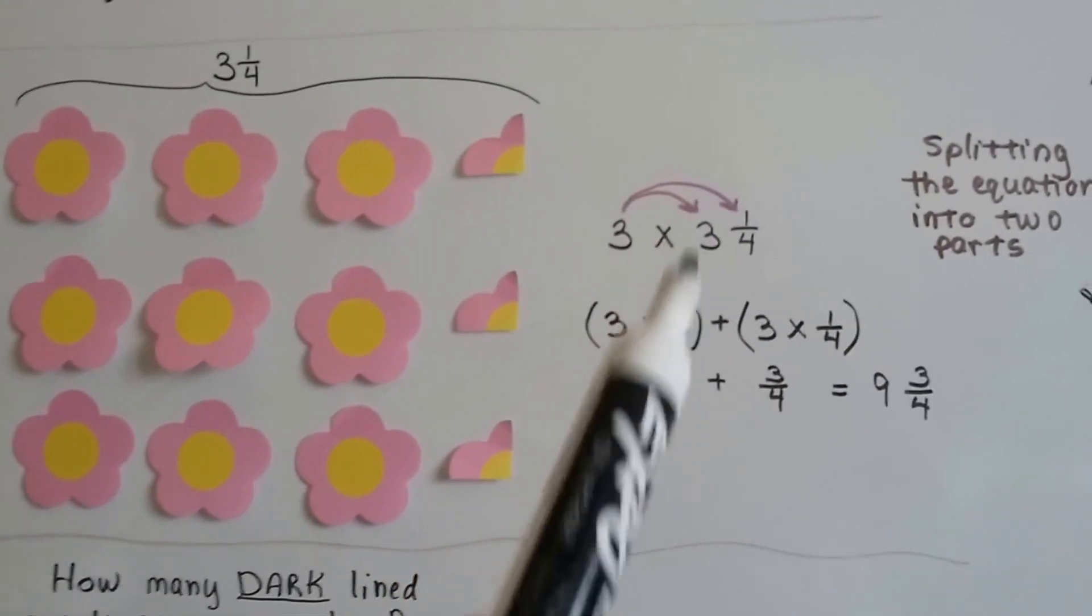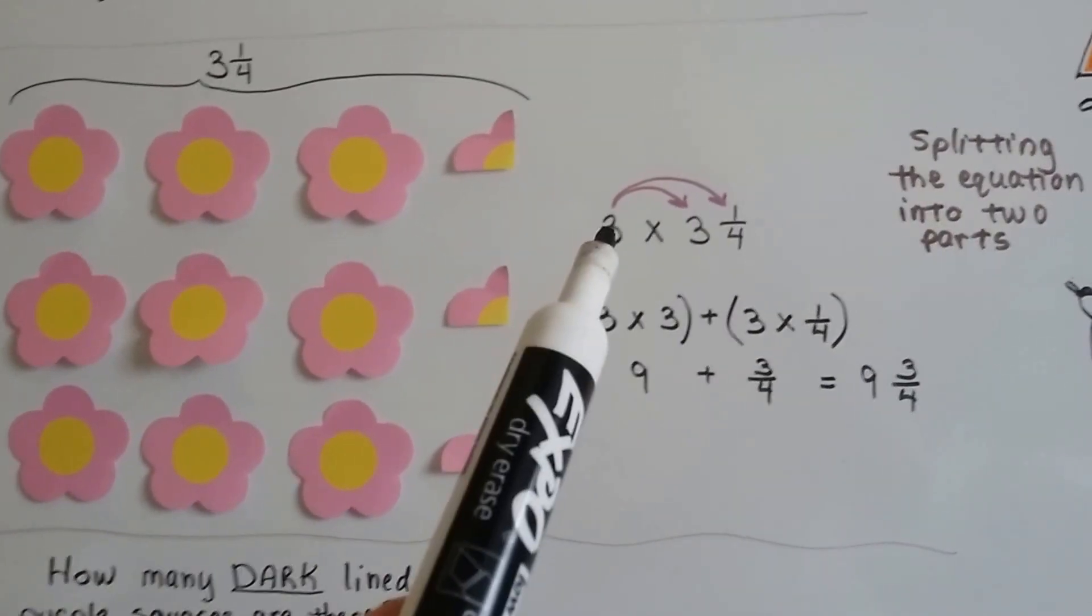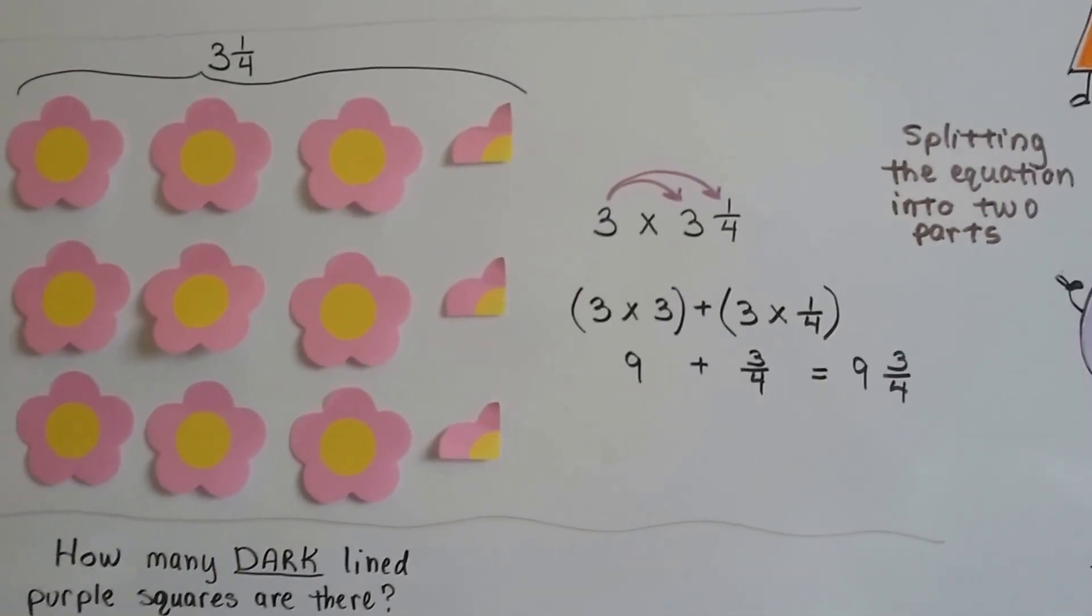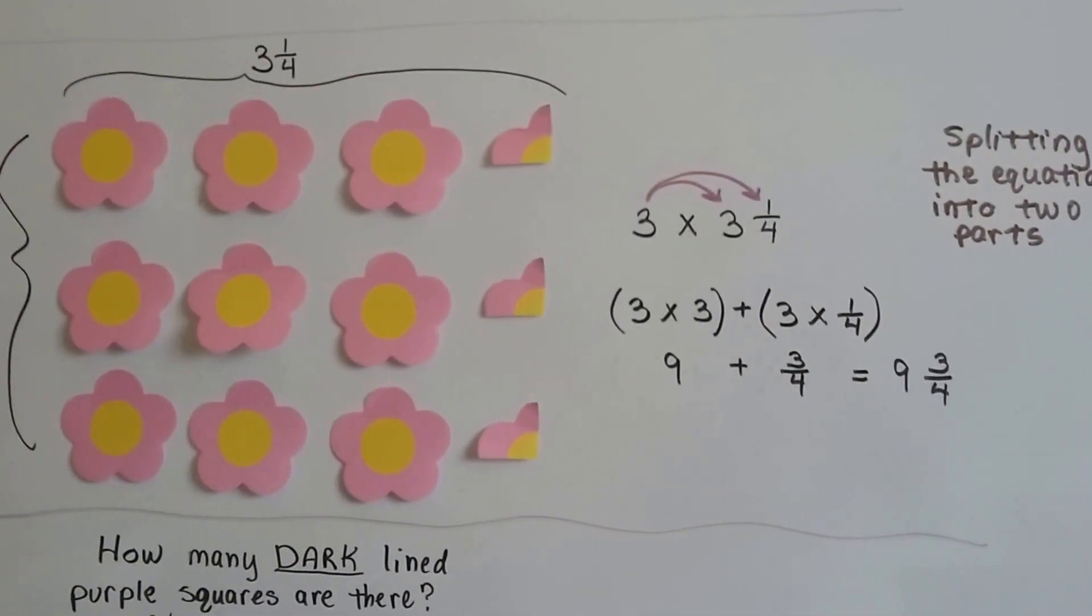We can multiply the 3 to the 3, and then multiply the 3 to the 1 fourth. And we get 9 and 3 fourths. We just split the equation into two parts.